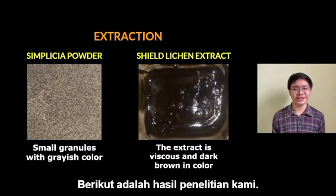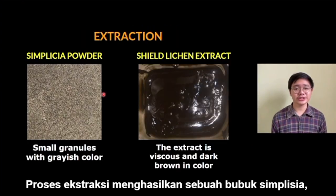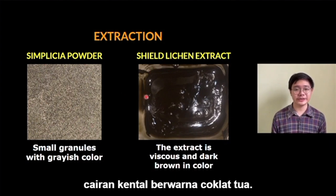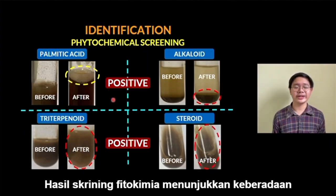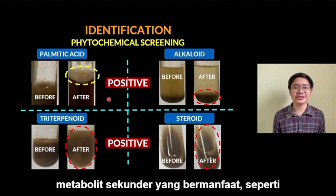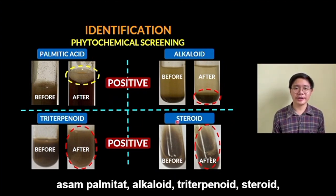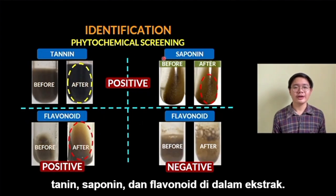The absence of blood vessel growth indicates great potential to inhibit angiogenesis. The less the blood vessel growth, the greater the potential. Here are the results of our research. The extraction produced simplicia powder, and the sheathlichen extract is viscous and dark brown in color. The phytochemical screening indicates potential secondary metabolites such as palmitic acid, alkaloid, triterpenoid, steroid, tannin, saponin, and also flavonoid in the extract.